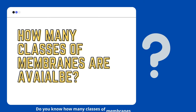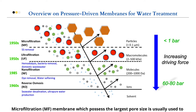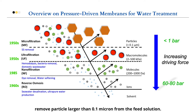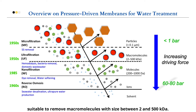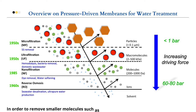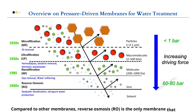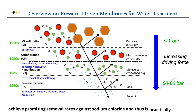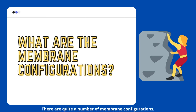Depending on membrane properties such as pore size, porosity, and hydrophilicity, several classes are used to differentiate these membranes. There are four classes of pressure-driven membranes in water treatment. Microfiltration membrane, which possesses the largest pore size, is used to remove particles larger than 0.1 micron from the feed solution. Ultrafiltration membrane, with a tighter pore size, is suitable to remove macromolecules with sizes between 2 and 500 kilodaltons. To remove smaller molecules such as dyes, micropollutants, and dissolved ions, nanofiltration membrane is employed. Reverse osmosis is the only membrane that can achieve promising removal rates against sodium chloride, and is practically used in brackish water and seawater desalination.